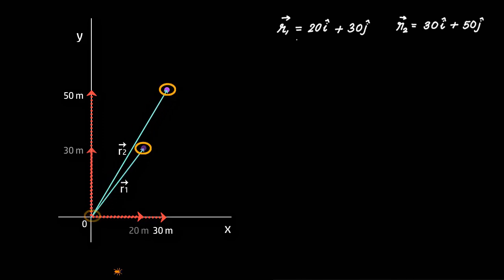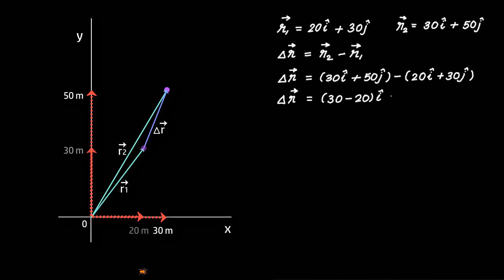Displacement of the particle can be written as Δr = r2 - r1, or Δr = (30i + 50j) - (20i + 30j), which equals 10i + 20j. What does this mean exactly? It simply means that the ball has moved 10 meters in x direction and 20 meters in y direction between the two positions.